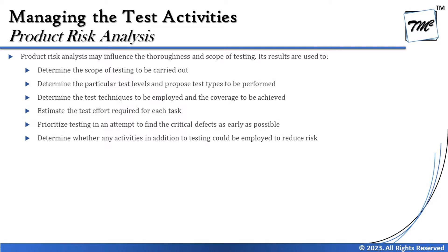Product risk analysis may influence the thoroughness and scope of testing. Its results are used to determine the scope of testing to be carried out, determine the particular test level, propose the test types to be performed, determine the techniques to be employed, the coverage to be achieved, and estimate the effort required for each task.